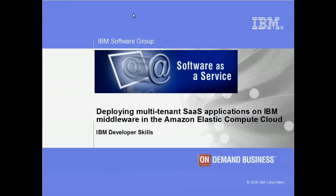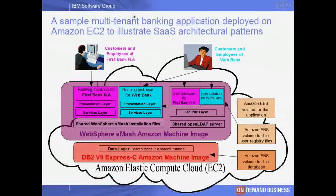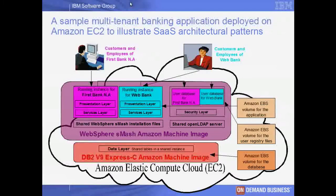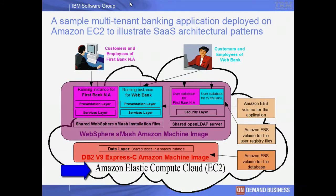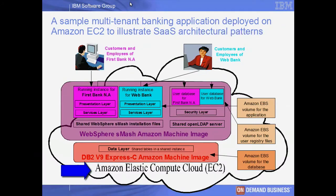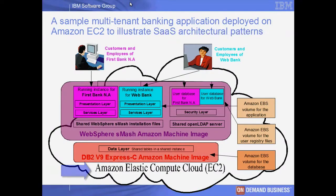This sample banking application has been used to illustrate multiple SaaS architectural patterns in earlier demos in this series, and is available for download from the website associated with this demo. Here we show the sample multi-tenant banking application and the IBM Middleware products in Amazon Machine Images used to deploy in EC2. Amazon's EC2 is a web service that provides resizable computing capacity in a cloud on which user applications and the underlying middleware can be run.